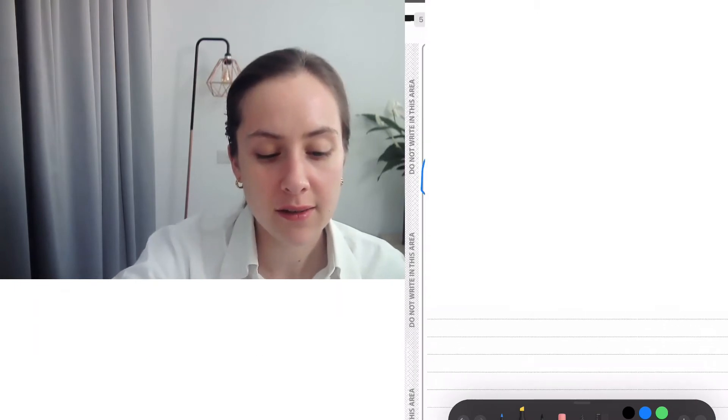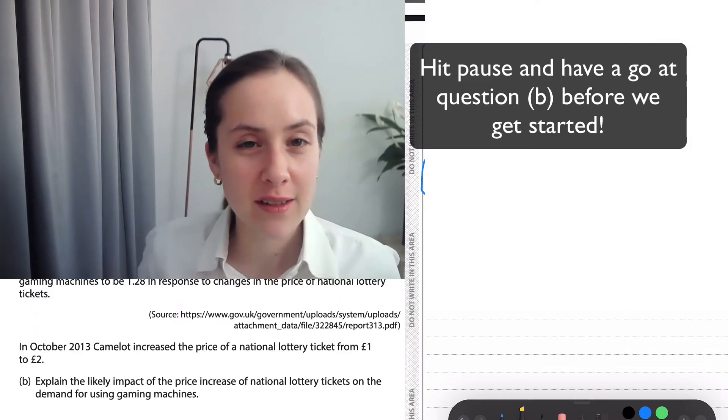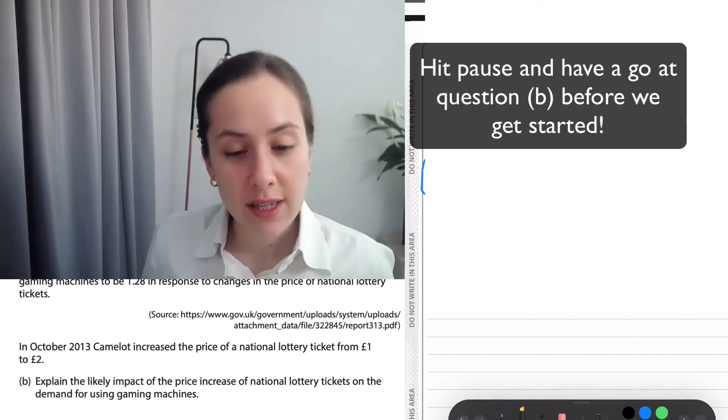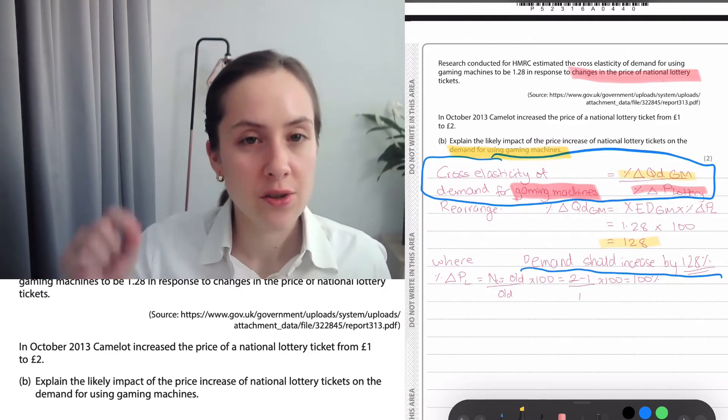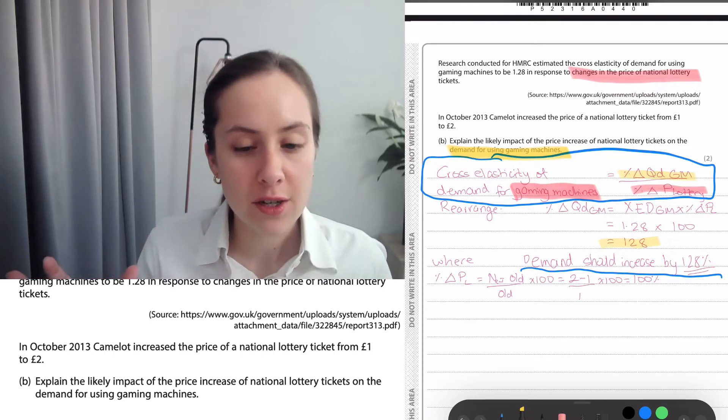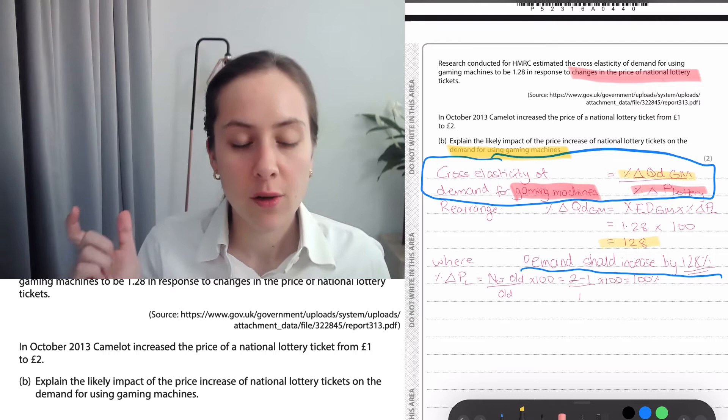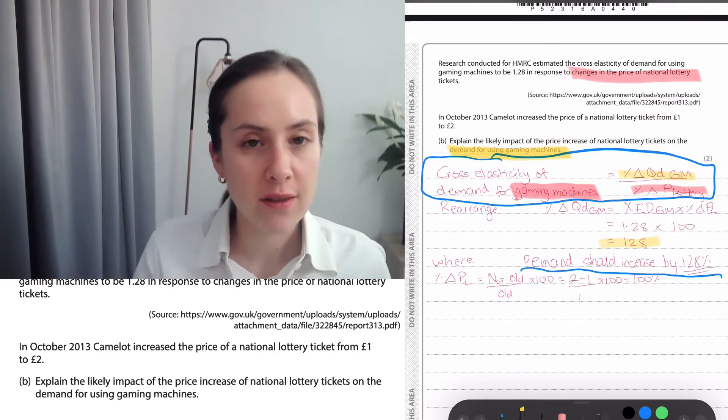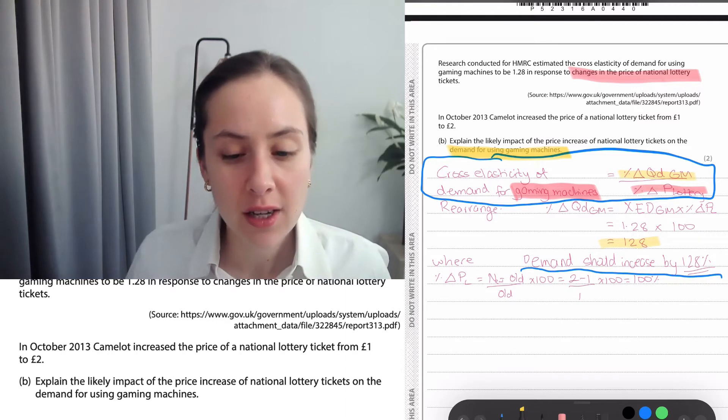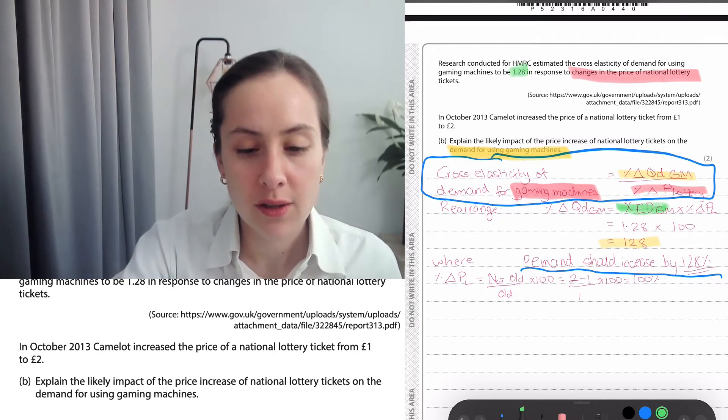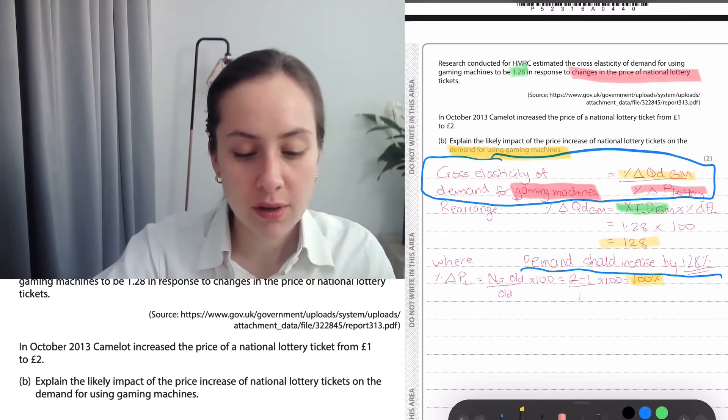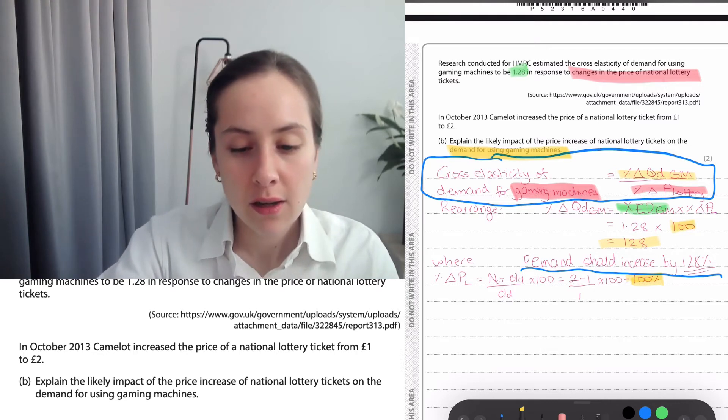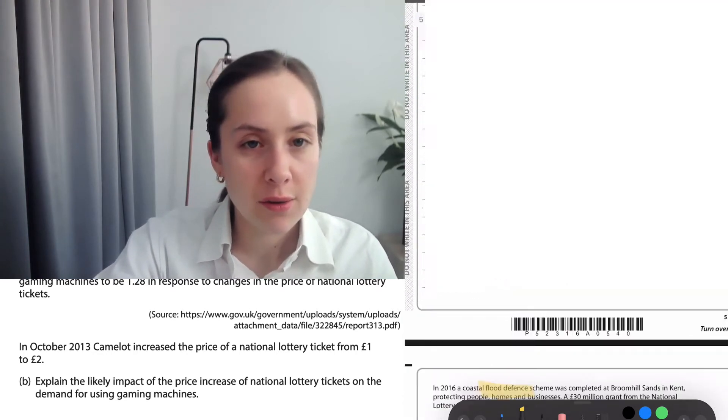The cross elasticity of demand equation is sometimes a bit tricky. Luckily, they kind of told us in the question what is involved. They told us that it's the price of lottery tickets changing, so that told me that was on the bottom of the equation. The question actually asked me for the yellow bit, which is the percentage change in the demand for gaming machines. So I rearranged the cross elasticity equation, and I need to multiply the XED times the price percentage change. So the XED, they gave that as 1.28, and the percentage change in price I have calculated down here to be 100. So I multiply these things together and I get that the demand increased by 128%.